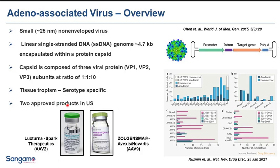Currently there are two approved AAV products in the U.S. One is Luxturna from Spark Therapeutics using AAV2 serotype, and the second is Zolgensma from AveXis using AAV9 serotype for SMA treatment. Clinical trials have increased in recent years in both academic and industrial settings, with many trials at Phase 1-2 stage and some at Phase 3. AAV2 serotype still dominates the field, followed closely by AAV8 and AAV9. Tissue-specific promoters are more common in recent times.